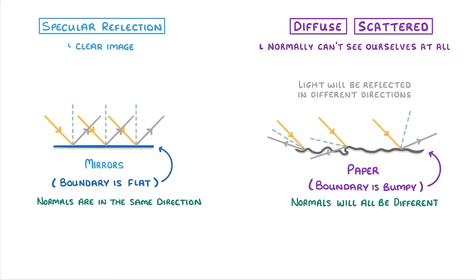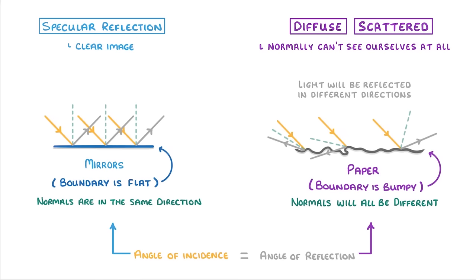Importantly, in both of these types, the angle of incidence is always equal to the angle of reflection. It's just that the surface of a rough material isn't flat, so the normals, which are perpendicular to the surface, will always be pointing in different directions, and so the reflected rays get scattered.